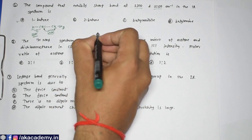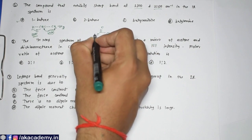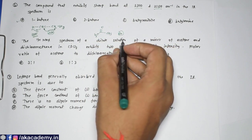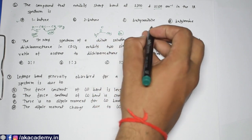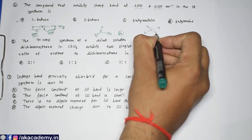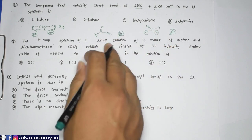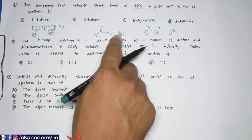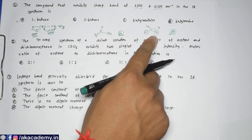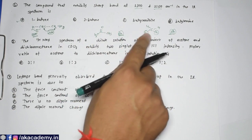For acetone, C=O with two CH₃ groups, we have a total of six hydrogens. For dichloromethane, Cl₂CH₂, we have only two hydrogens. So you can see the number of hydrogens in acetone is three times higher than in dichloromethane.